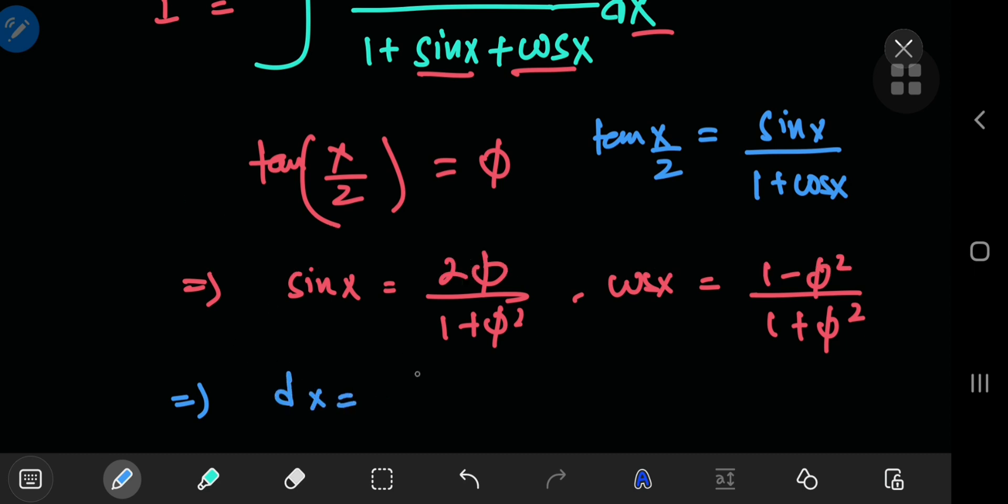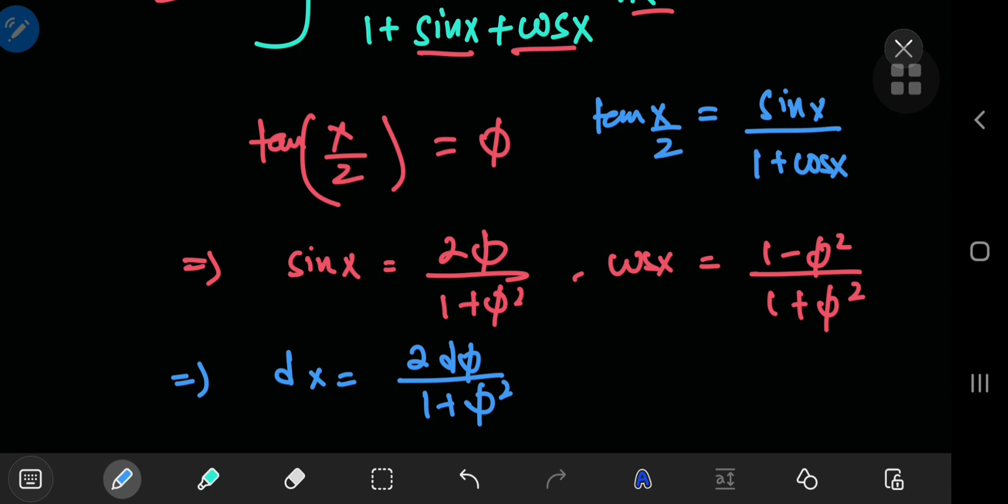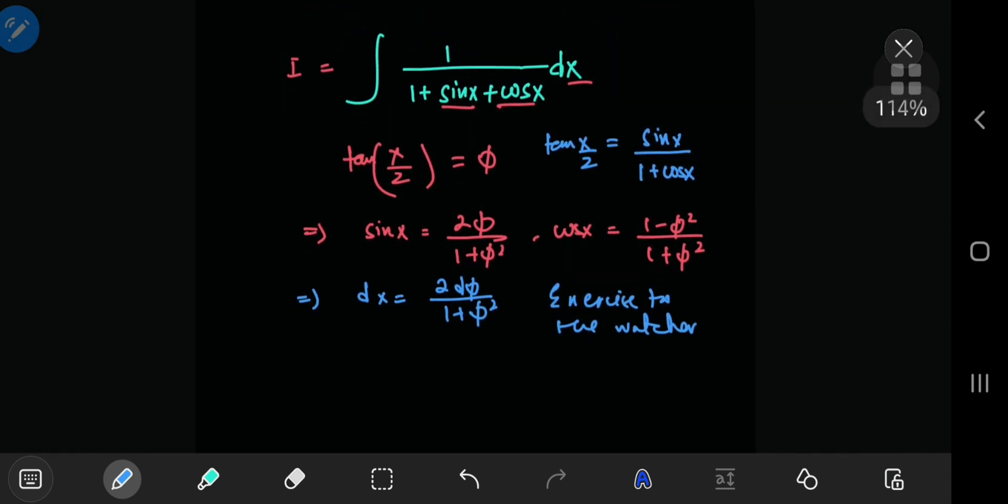The differential element is transformed into 2 times d phi divided by 1 plus phi squared. All of this is left as an exercise to the reader or the watcher in this case. So you can prove this later—now time to actually use the substitution. This is your integral.